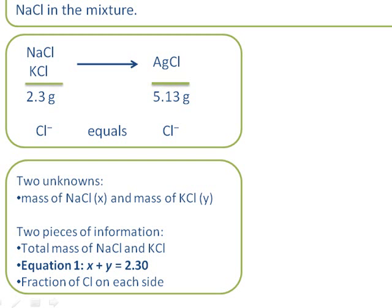We have two unknowns: the mass of sodium chloride, which I'm going to call X, and the mass of potassium chloride, which I'm going to call Y. We have two pieces of information. We know the total mass of sodium chloride and potassium chloride. So straight away I can build one equation: X plus Y equals 2.3. The total mass of sodium chloride and potassium chloride is 2.3 grams.